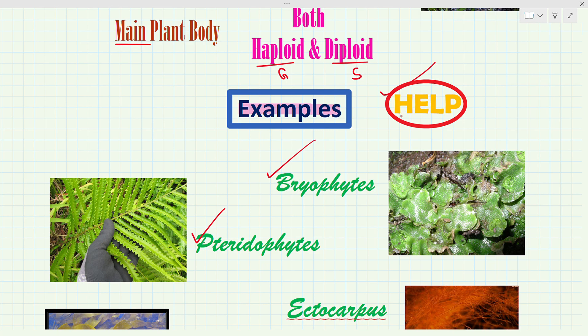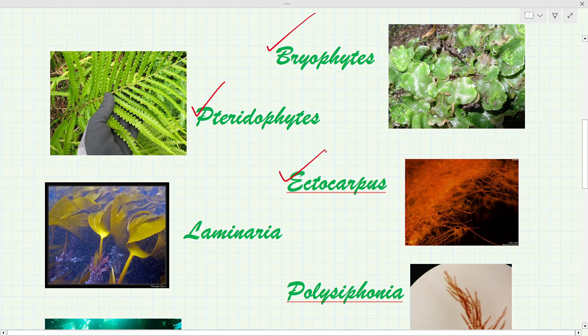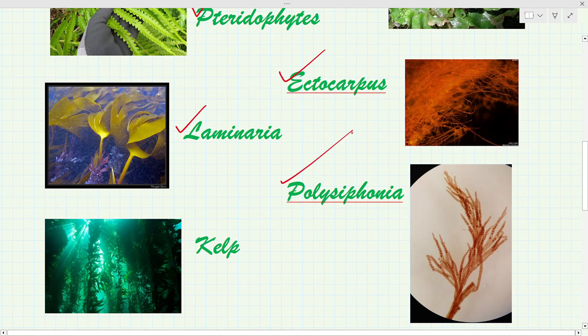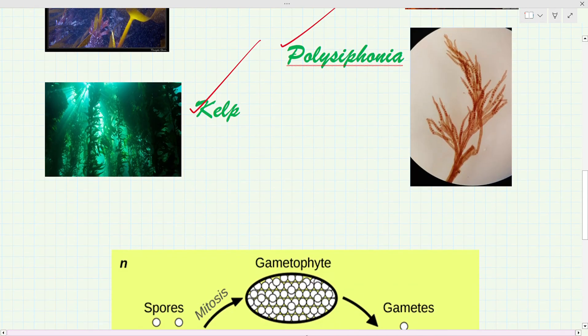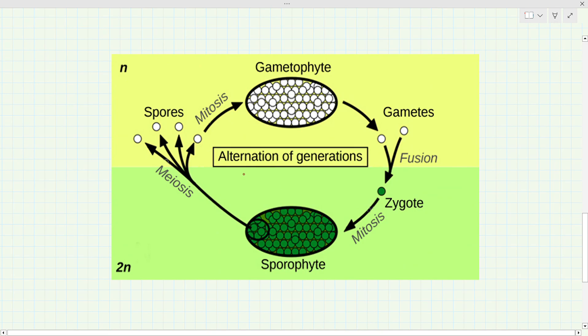The trick is the word HELP — H represents haplodiplontic life cycle, E for Ectocarpus, L for Laminaria, P for Polysiphonia. The word HELP is very similar to the word kelp. Now moving to the main part, which is alternation of generation.